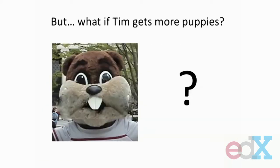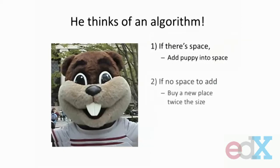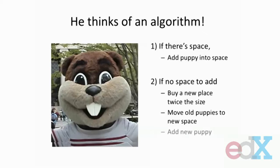But what if Tim gets even more puppies? Since Tim is new, he doesn't know how many puppies he's going to need to store over the course of his business. Luckily, Tim thinks of a new algorithm: if there's space in the current facility, he just adds the puppy into the available space. But if there isn't, he's going to buy a new space that's twice the size of the old, and then move all the puppies from his old facility into the new space. Now there's going to be twice as much space, so there's definitely going to be enough space to add a new puppy.